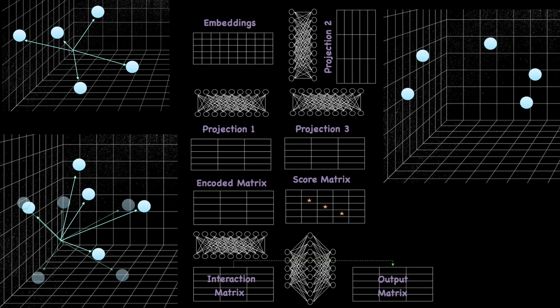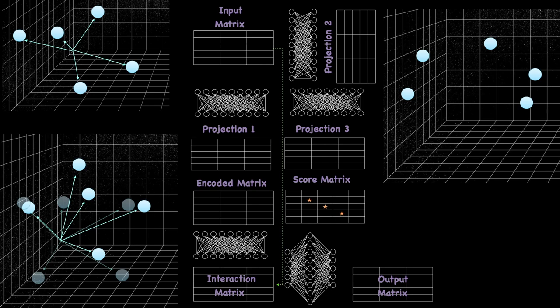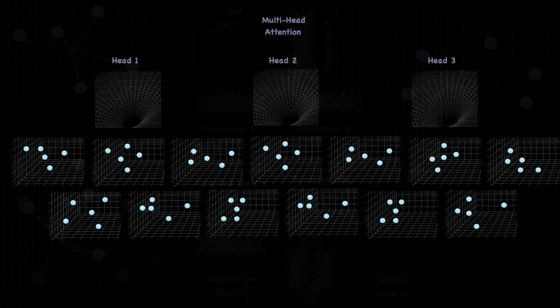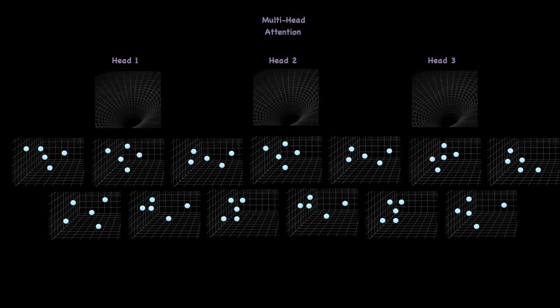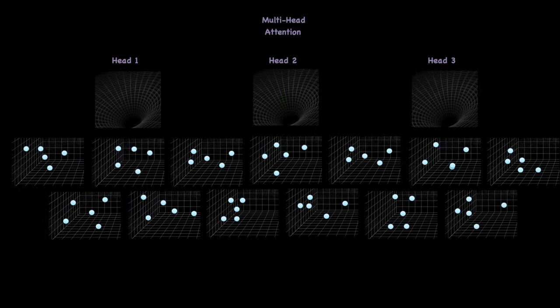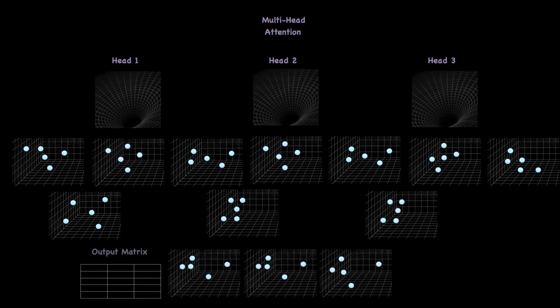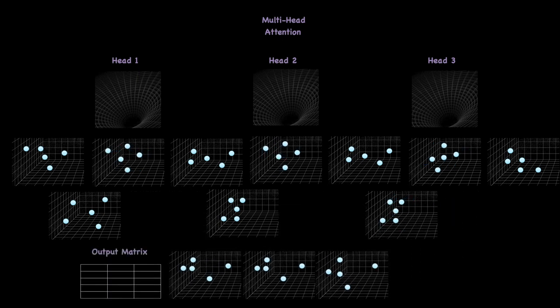The interaction matrix results will be added back to the output matrix — this is called residual learning. It prevents loss of information and allows the network to extend to many layers. In the decoder, we may also add the input matrix to the interaction matrix results to enable residual learning. Zooming out, we see that the different heads of the attention network are performing all operations we just described. At the end, all the results of the different heads are concatenated together to form the AttentionHeads output matrix.